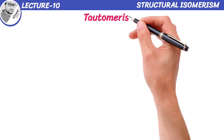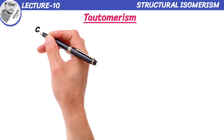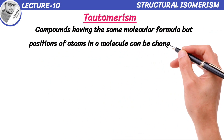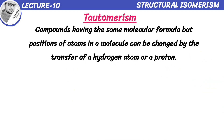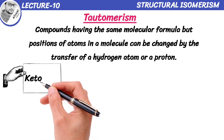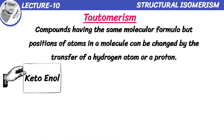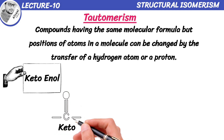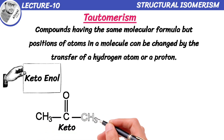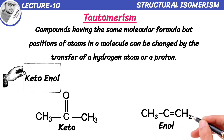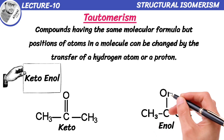Tautomerism is a type of structural isomerism where compounds have the same molecular formula, but the positions of atoms in a molecule can be changed by the transfer of a hydrogen atom or a proton. Let's take an example. Imagine you have a compound that exists in two forms: the keto form and the enol form. The keto form has a carbonyl group with a double bond between carbon and oxygen, while the enol form has an alcohol group connected to a double bond.